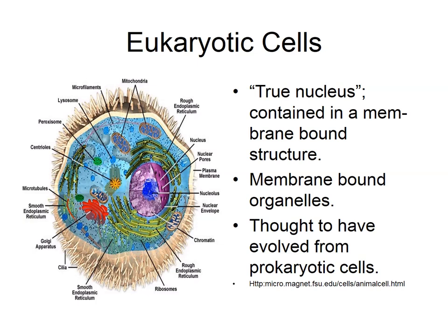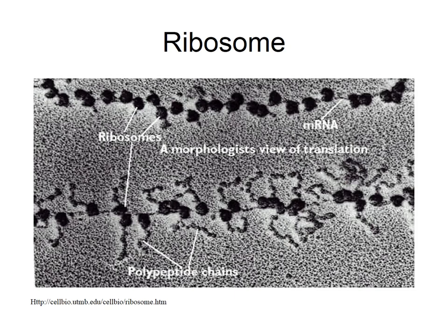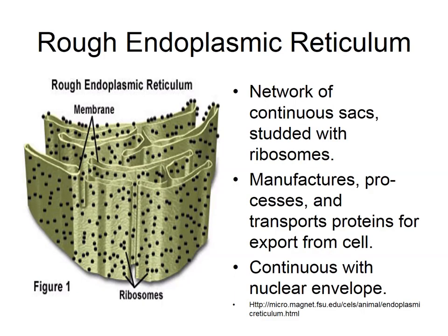Eukaryotic cells came second in the evolutionary timeline after prokaryotes. The name eukaryotic comes from 'eu' meaning true and 'karyon' meaning nucleus — they have a true nucleus. They contain membrane-bound organelles and are thought to have evolved from prokaryotic cells. They have ribosomes that translate the genetic code into proteins via mRNA. In eukaryotic cells, ribosomes are located on the rough endoplasmic reticulum, not freely standing in the cytoplasm.